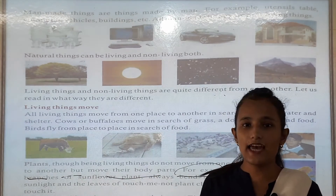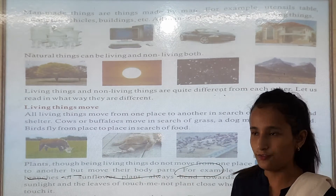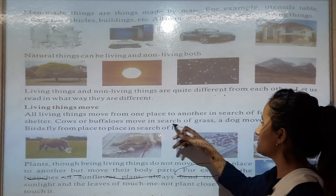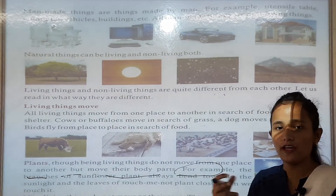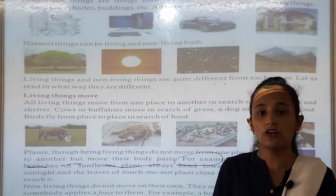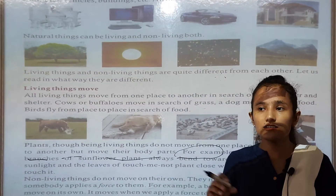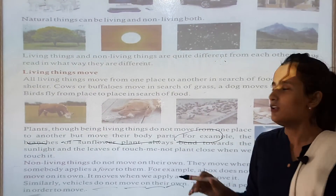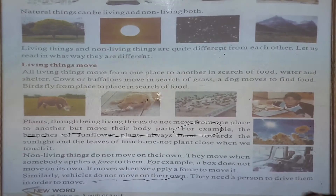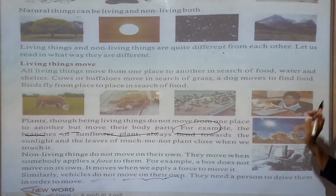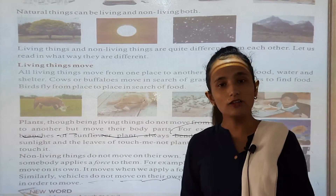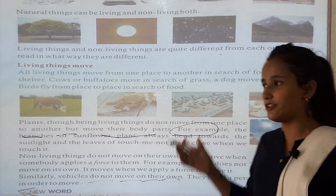Living things can move. Cow or buffalo move in search of grass. Cow and buffalo move because they are searching for grass — grass is their food. A dog moves to find food.